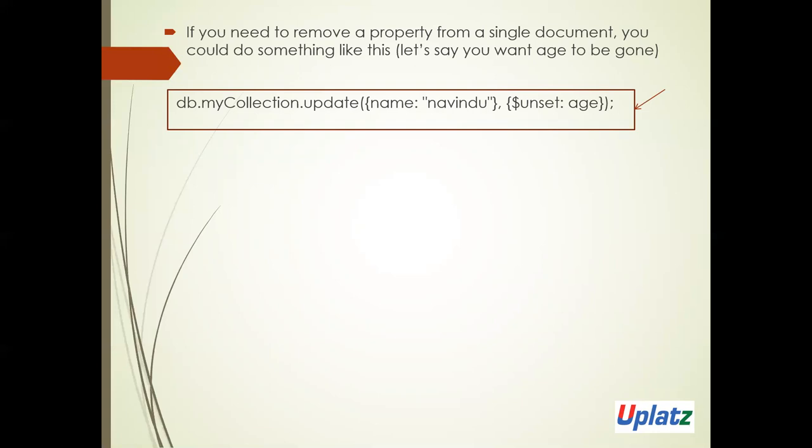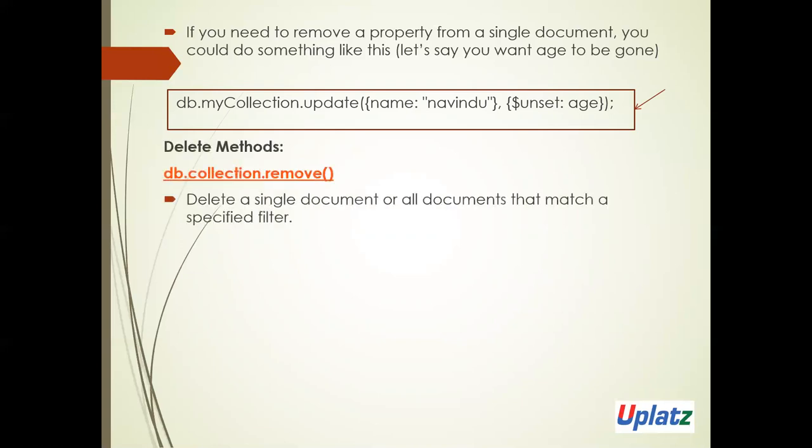One more thing: if we have four fields in a document and want to reduce it to three, we can remove a field using the $unset operator. For example, db.collection.update with $unset specifying the age field will remove age from that document in the collection. These are all the methods available for updating documents.